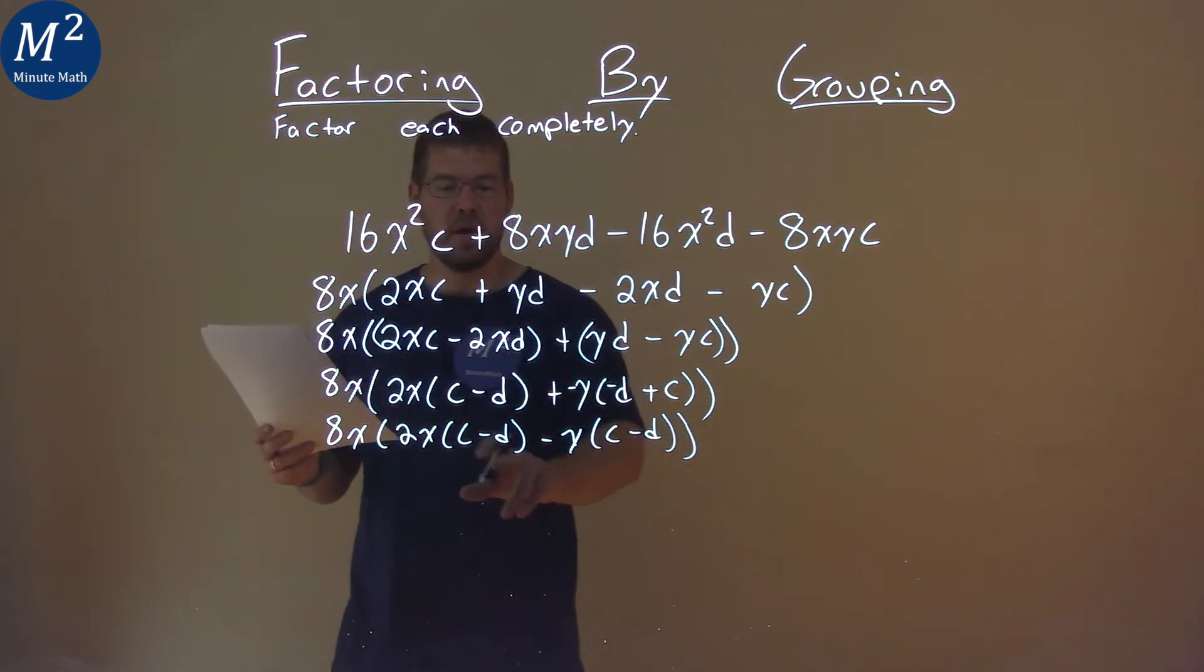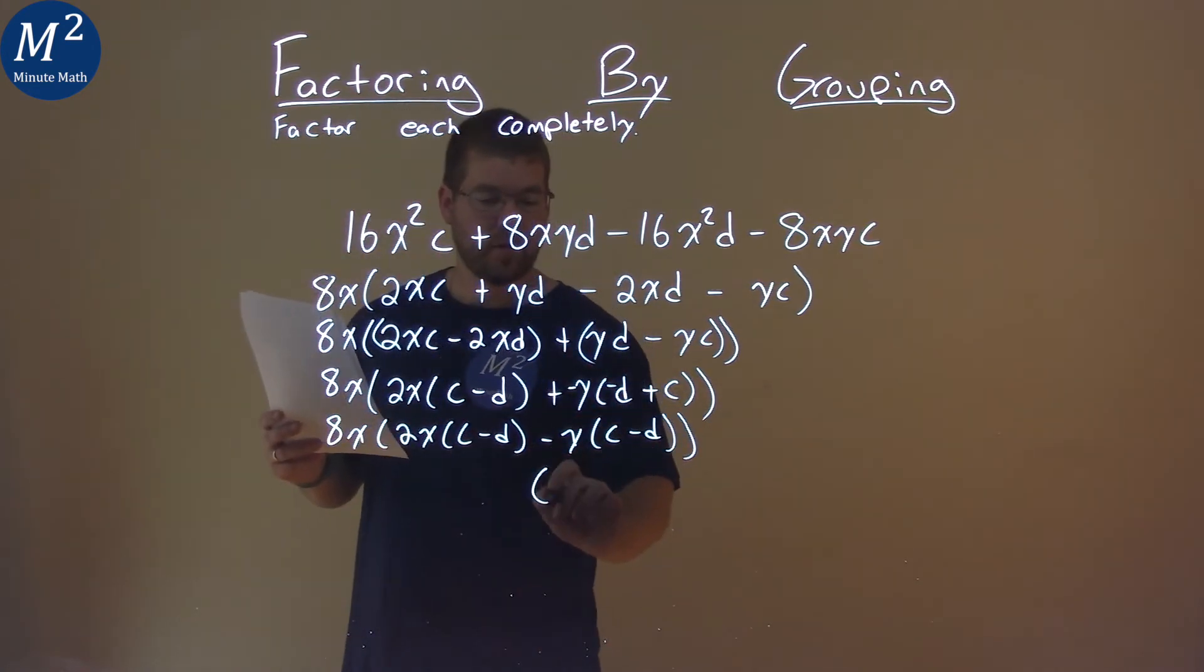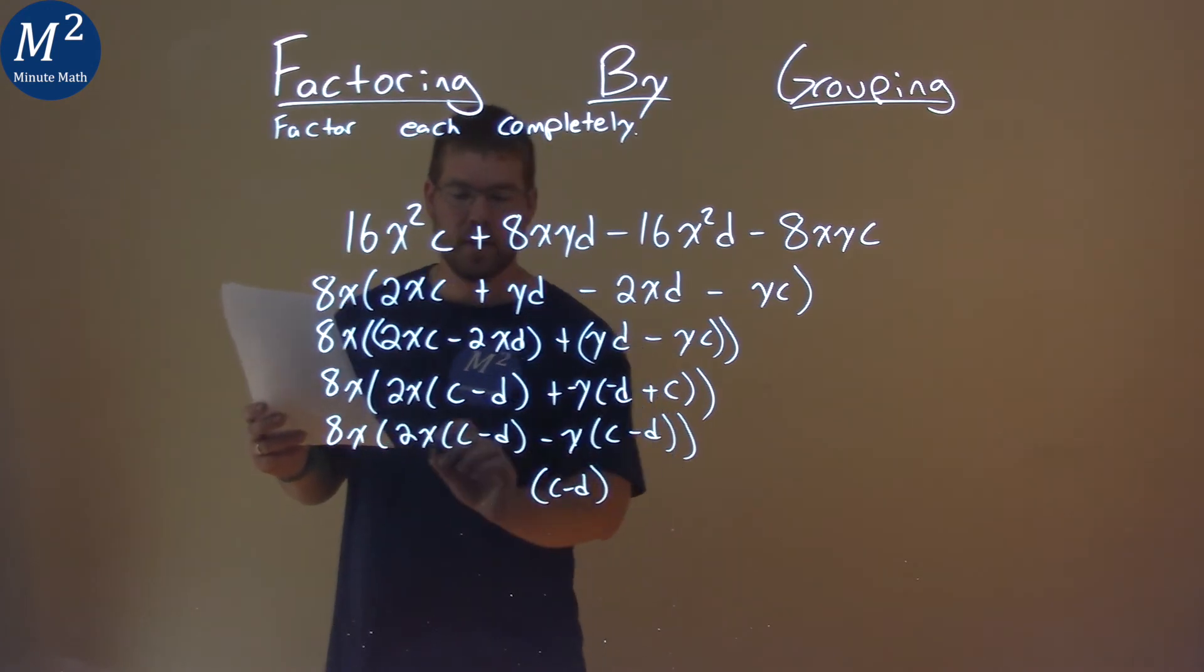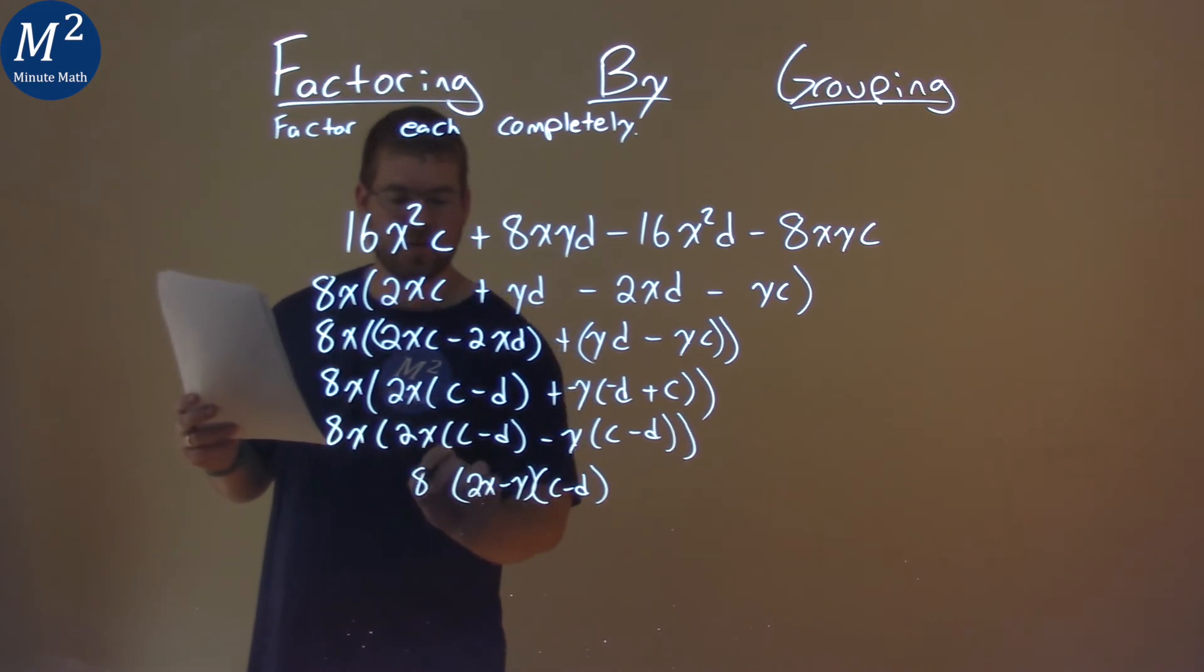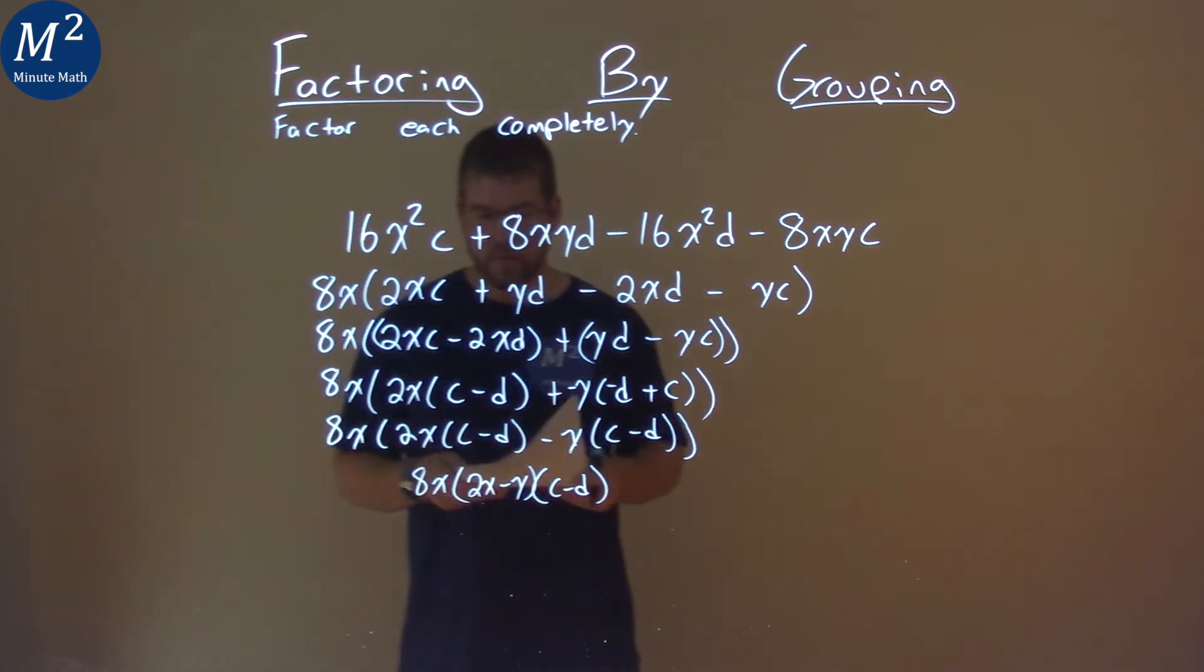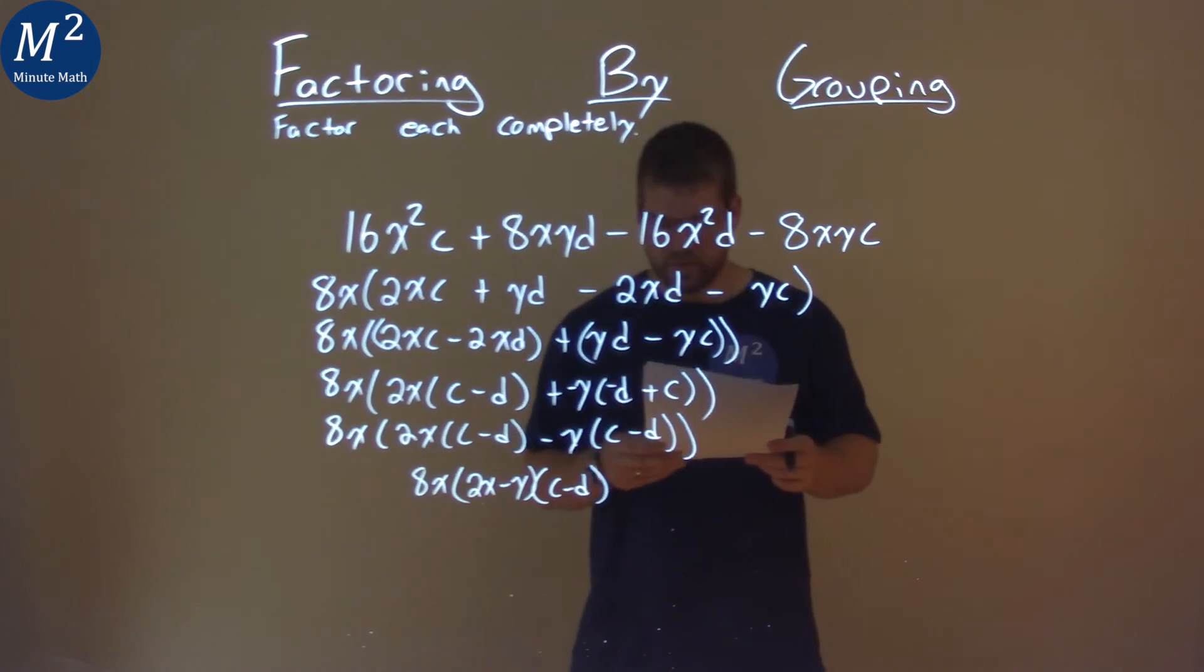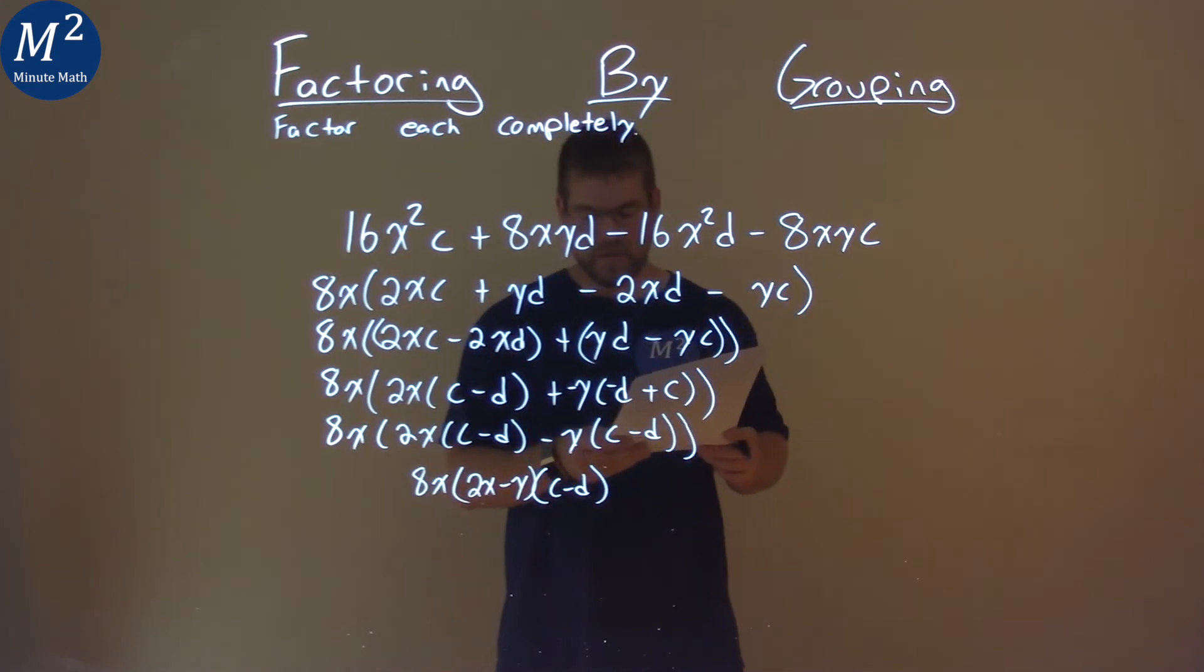c - d I can pull out from both parts, left with 2x - y here, and the 8x comes down. So my final answer is 8x(2x - y)(c - d).